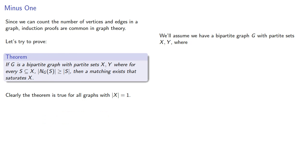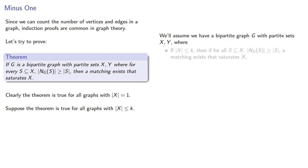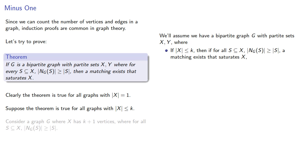For our induction step, let's assume the theorem is true for all graphs where x has cardinality less than or equal to k. In other words, if the cardinality of x is less than or equal to k, and for all subsets of x the neighborhood is larger than the subset, then a matching exists that saturates x. Now consider a graph g where x has k plus 1 vertices, and for all subsets of x the neighborhood is larger than the subset itself.